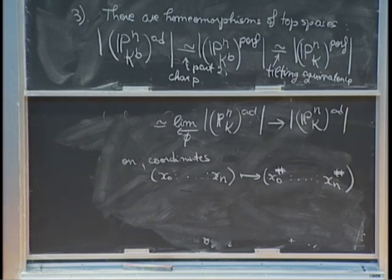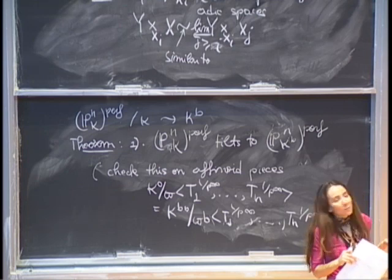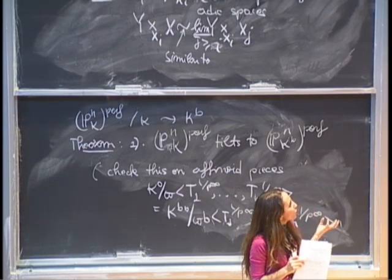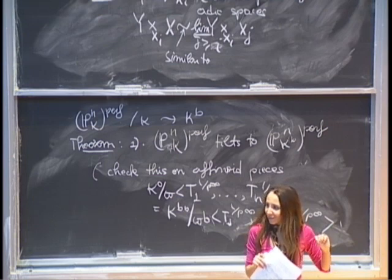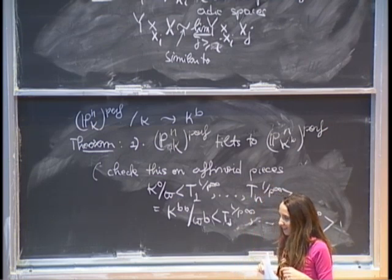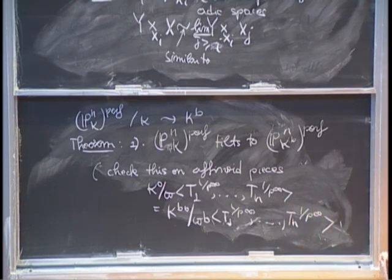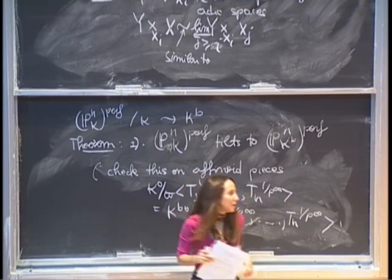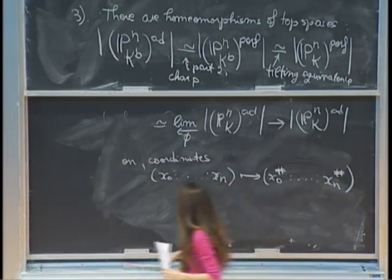The question is whether the projective linear group over F_p acts on the projective space over k-flat. It should, since this is defined naturally. It doesn't act on P^n over k, but it does act on P^n over k-flat, because of the equivalence of categories. So it acts on the infinite-level perfectoid space but not on the finite-level one over k.